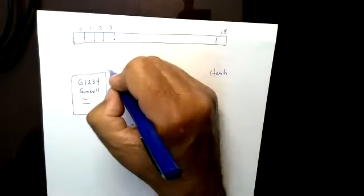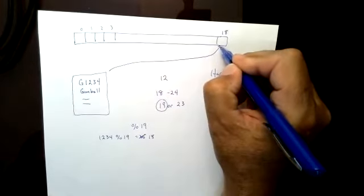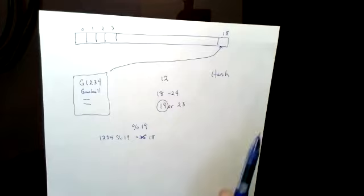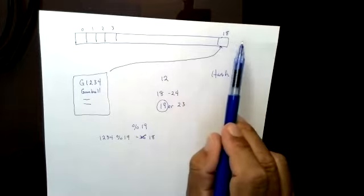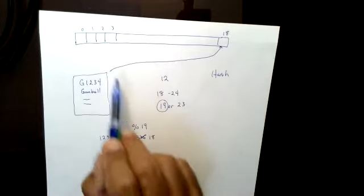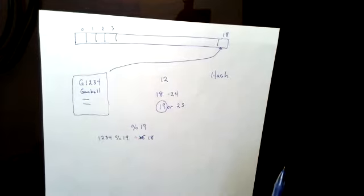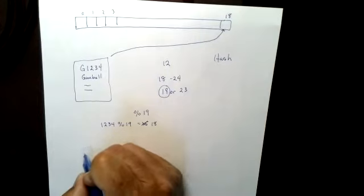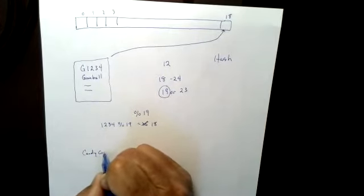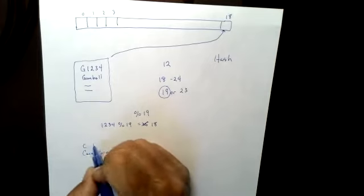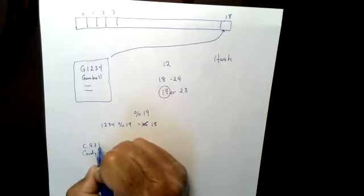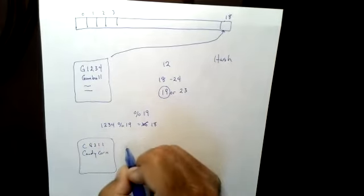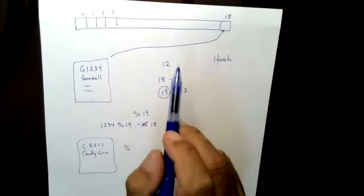So where does this record get stored? This record gets stored in that array. So array subscript 18 equals the variable that I have for this struct. The next one could have been candy corn. We would look at its number 8211 and do the same thing, mod, and store it.